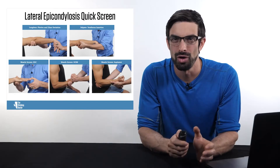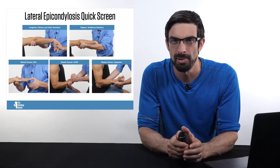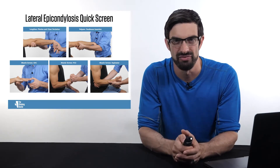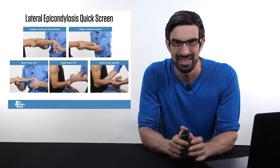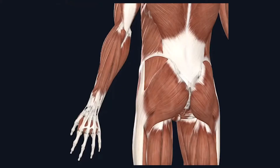In order to rule up or down this diagnosis, you can perform a quick screen of the main muscles involved. The muscles that extend your wrist and fingers back, as well as rotate your palm upward, attach into a location on the outside of your elbow known as the lateral epicondyle.